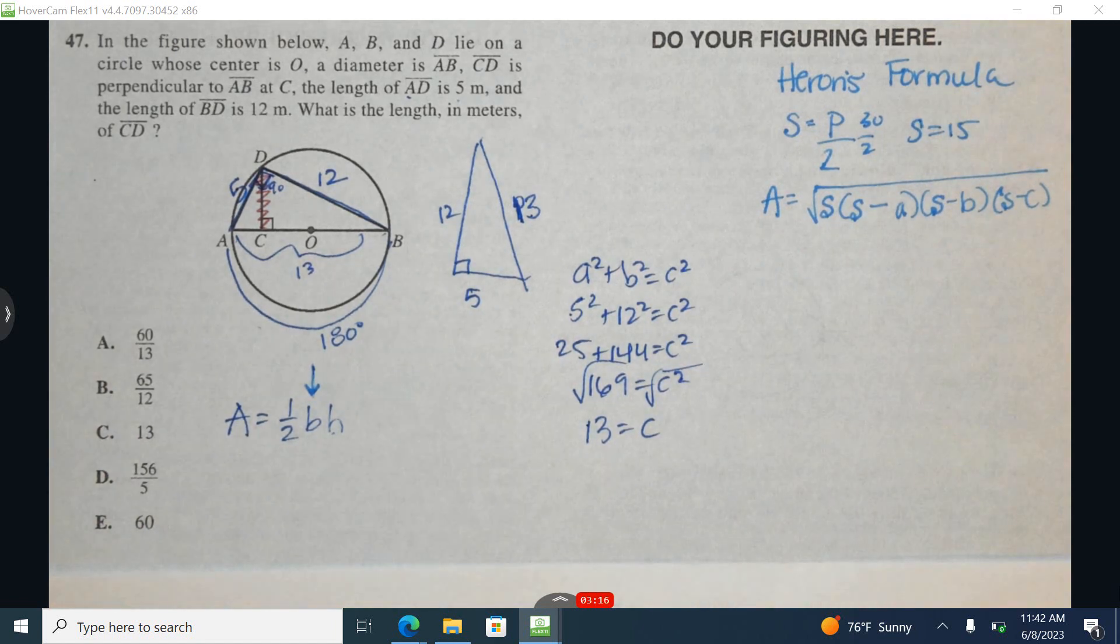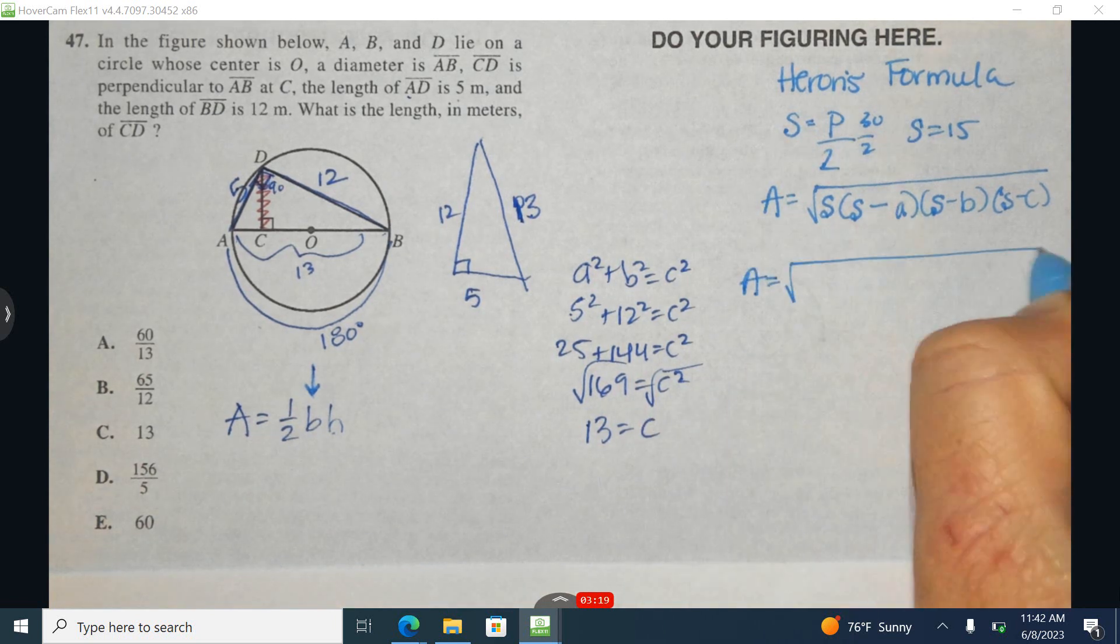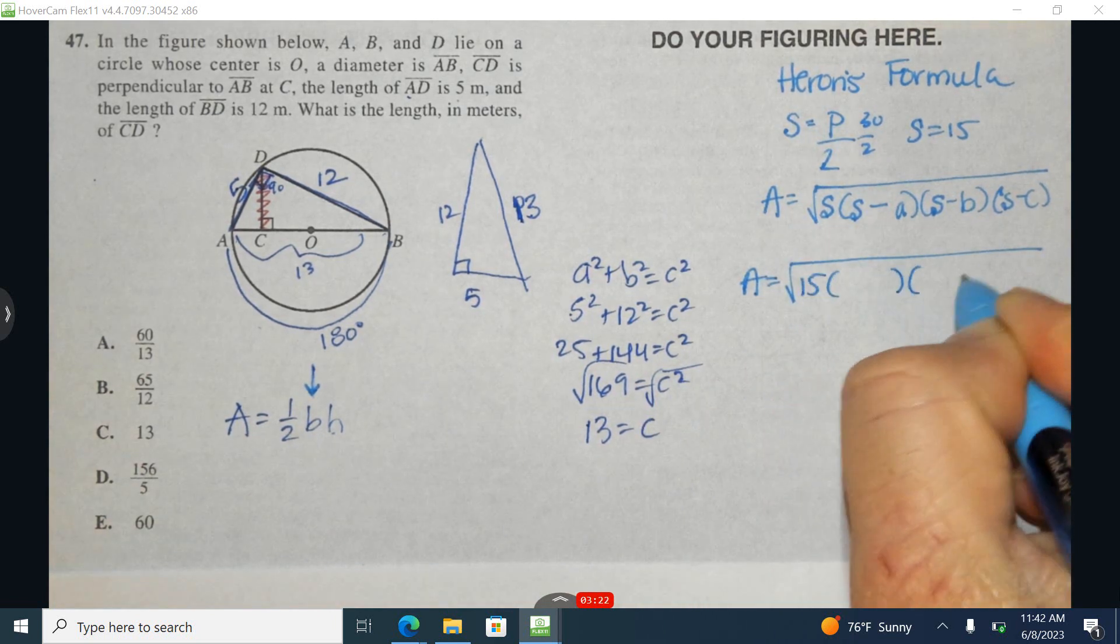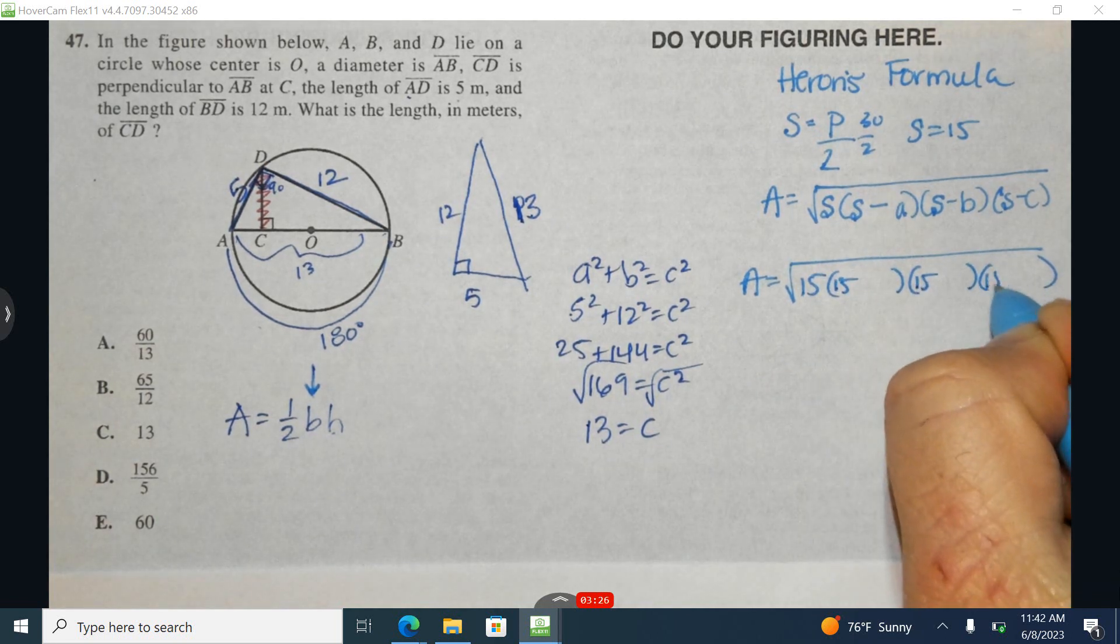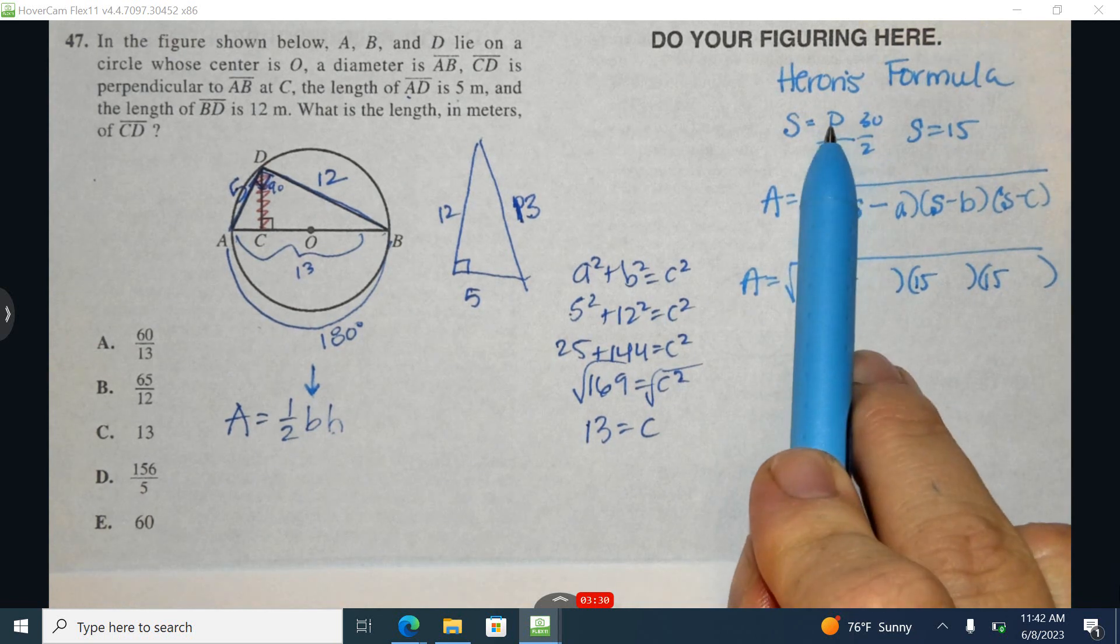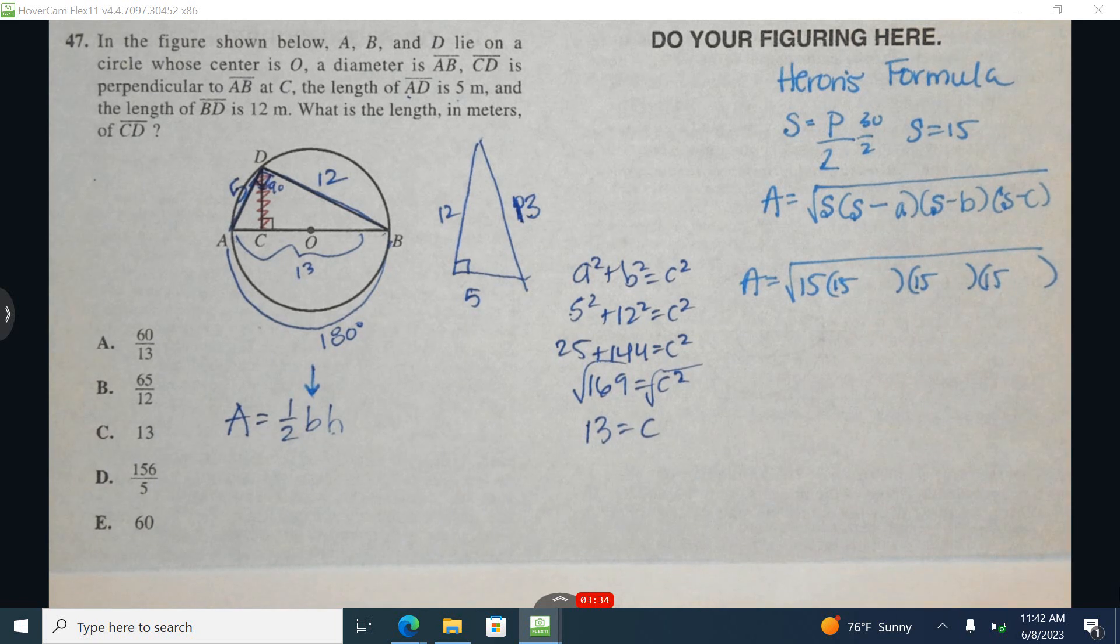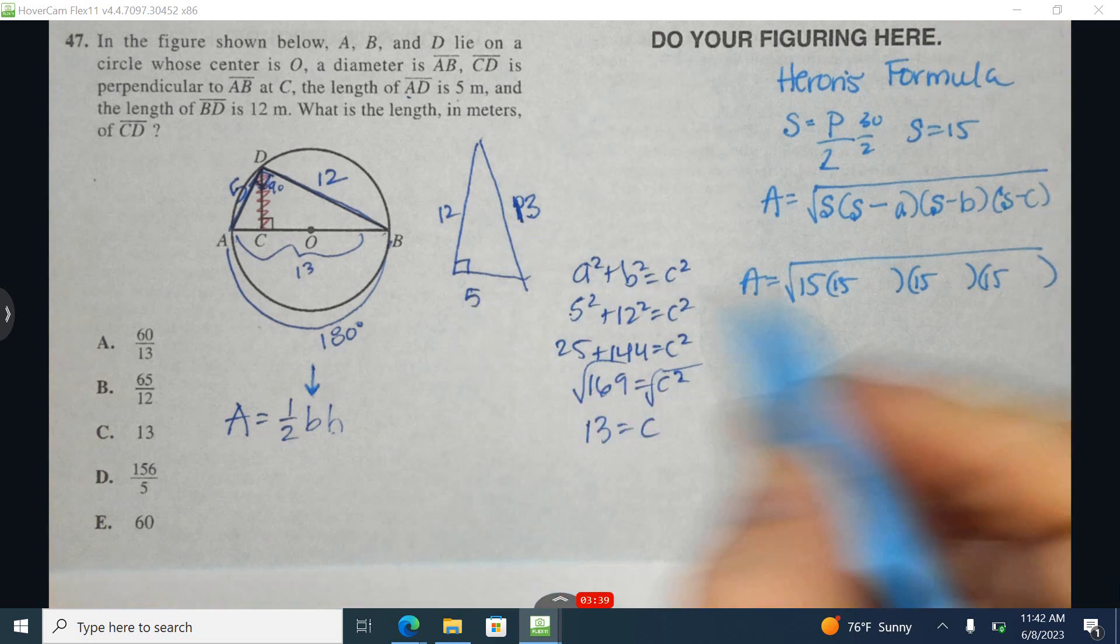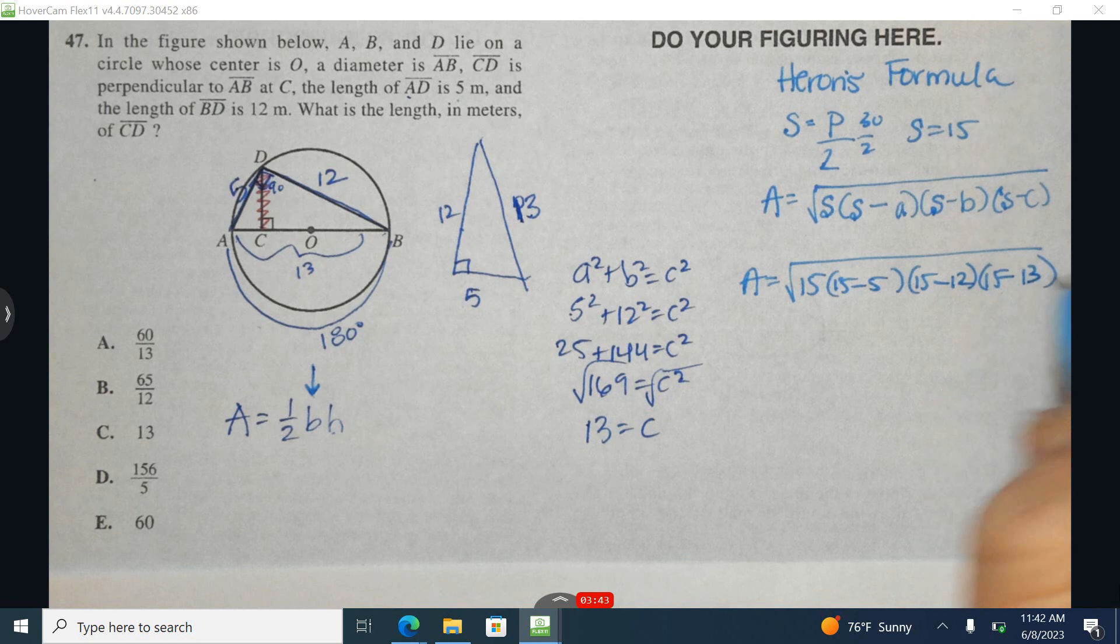This is the formula. It will not be provided for you for Heron's formula. Once again, Heron's formula says whenever you have three sides of a triangle, you can achieve the area by plugging in the following. First you identify the semi-formula, adding up the three sides and dividing by 2. Then A, B, and C just represent the three different lengths of the triangle. You can plug those in in any order.